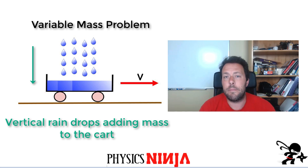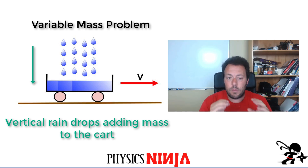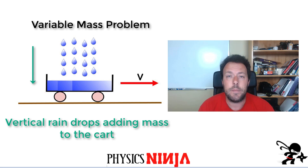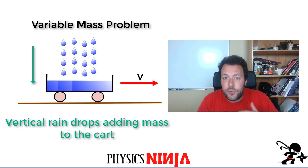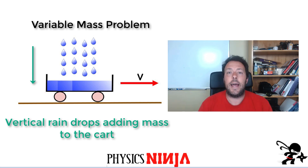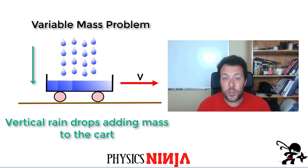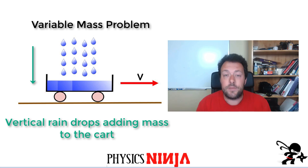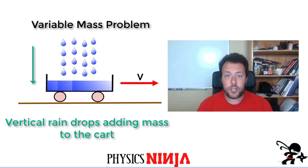We're going to break this problem down. We'll look at the momentum and how it changes as a function of time to get a differential equation, and then solve that differential equation to find the speed of the cart at any time t. Once you know the speed, you simply take the derivative with respect to time to find the acceleration.